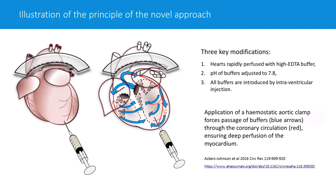Beyond the isolation principle itself, we introduced three key modifications. First, hearts are rapidly perfused with a high EDTA buffer to drop calcium immediately while the heart is still in the chest of the mouse, since calcium overload can cause cardiomyocyte death. Second, data indicated that buffer pH needs to be adjusted to 7.8, which ensures higher cell survival. Third, all buffers are introduced by intraventricular injection, which is not particularly expensive, allowing everyone to use this technique.